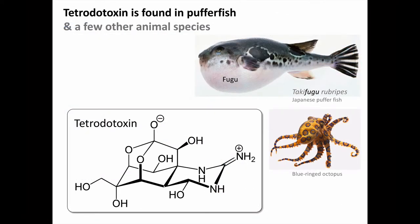I'm going to be covering these seafood toxidromes in the order on the objective slide, with tetrodotoxin first. Tetrodotoxin is best known for being found in pufferfish, although it's also found in a few other species such as the blue-ringed octopus. Here in the upper right, we see the Japanese pufferfish of the Takafugu genus, from which we get the name Fugu. Tetrodotoxin is synthesized by bacteria living in the fish, and is most concentrated in the fish's liver, intestines, skin, and gonads.